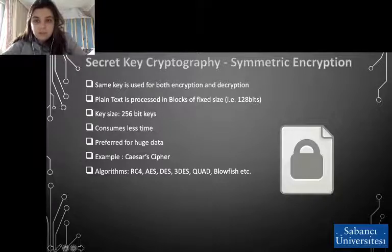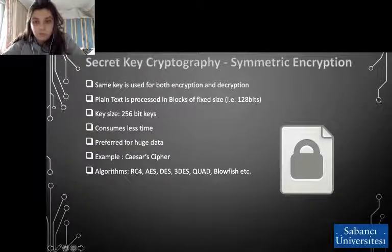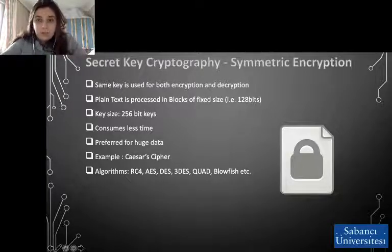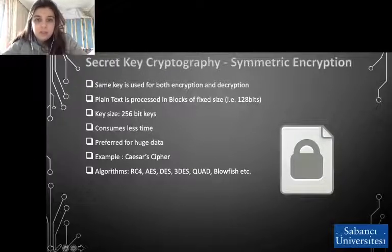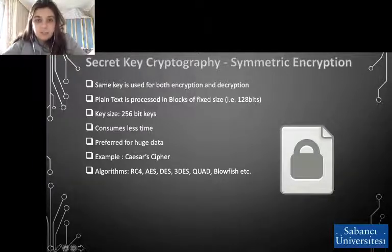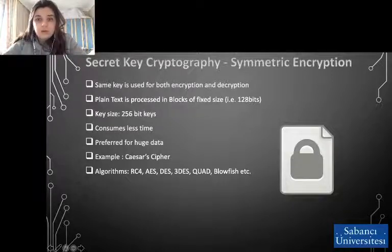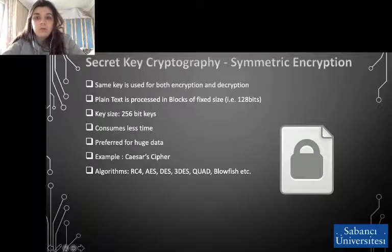Once the intended recipient who possesses the key has a message, the algorithm reverses its action so that the message is turned back to its original, understandable form. The secret key that both sender and recipient use could be a specific password or code, or it can be a random string of letters or numbers generated by a secure random number generator (RNG). Plain text blocks have fixed sizes, and the efficient key size is 256 bits. While symmetric encryption is an older method, it is faster and more efficient than asymmetric encryption, which takes a toll on networks due to performance issues with data size and heavy CPU use. Due to its better performance, symmetric cryptography is typically used for bulk encryption — encrypting large amounts of data, for example for database encryption.